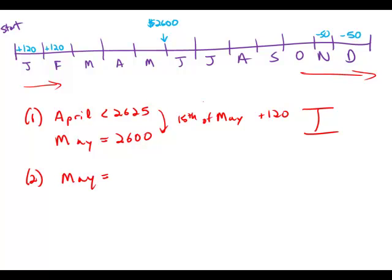So again, May we know is equal to $2,600. The end of June is less than $2,675. Well, again, on the 15th of June, only one of two things could have happened. We either added $120 or subtracted $50.